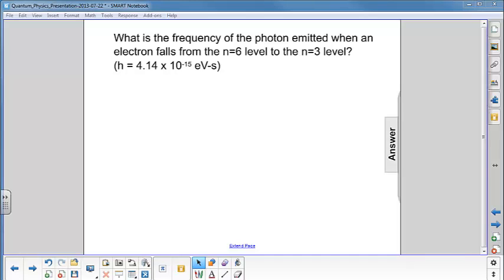What is the frequency of the photon emitted when an electron falls from the n equals 6 level to the n equals 3 level?